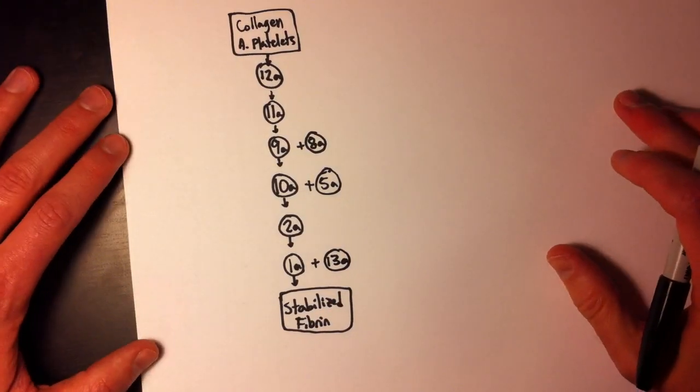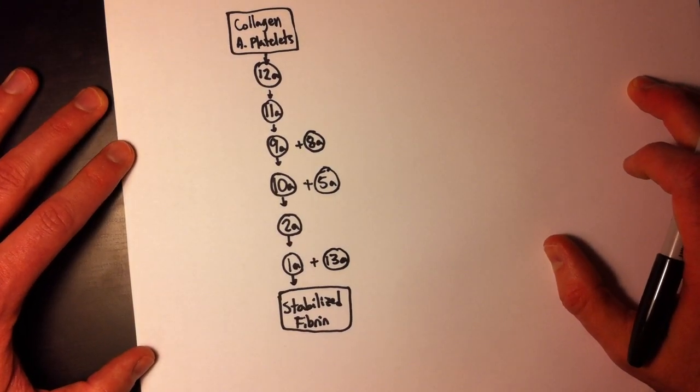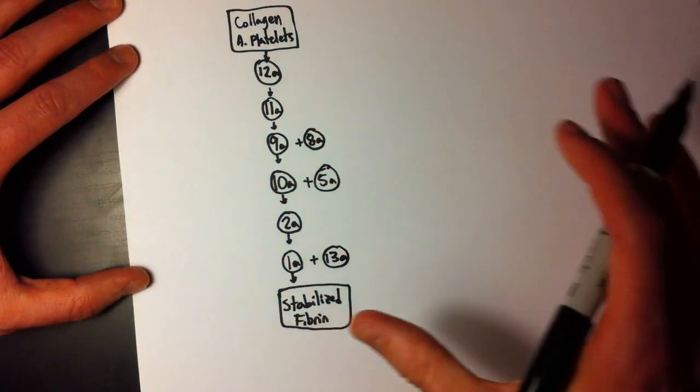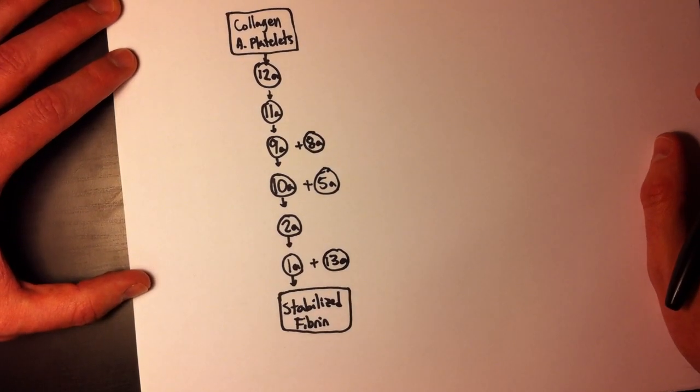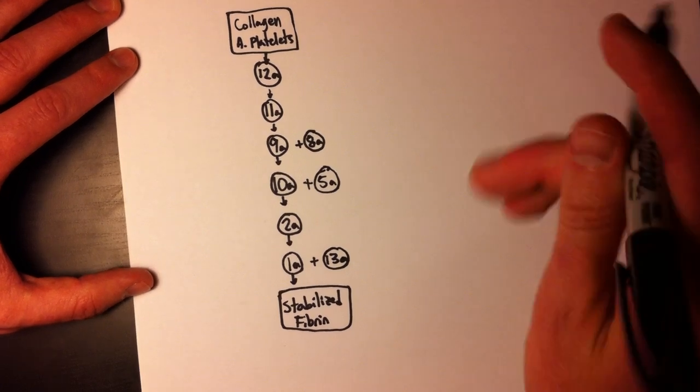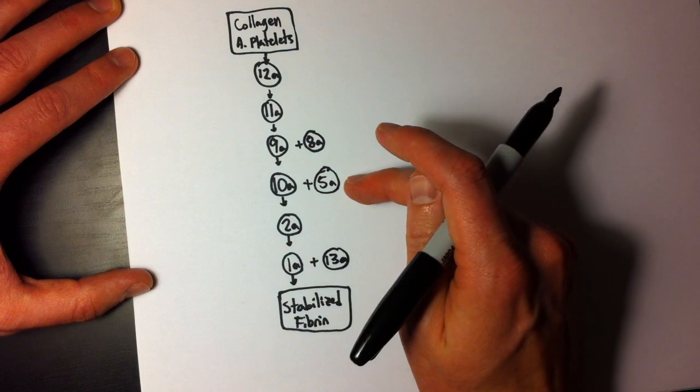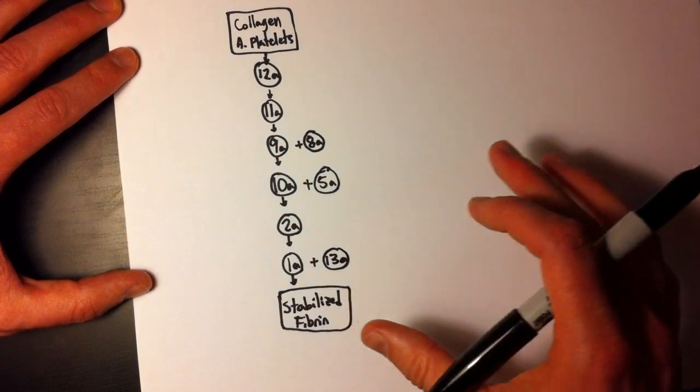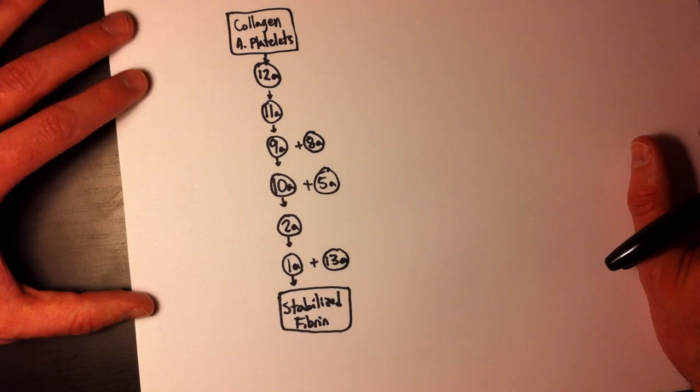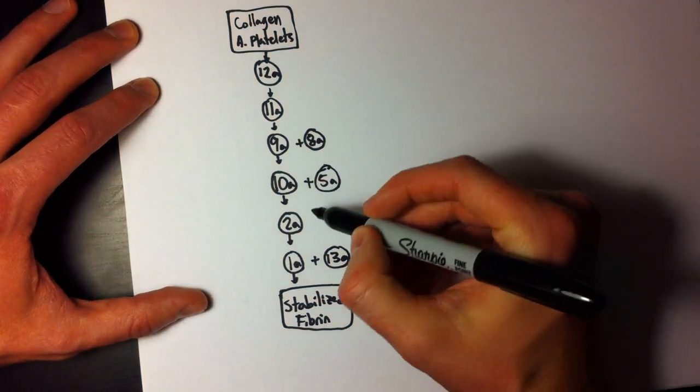So hopefully, at least for you, I mean I know for me this is a lot simpler than what I've seen. And this pretty much takes care of a lot of it. I guess we still have a few more details to add in. So 8A, 5A, and 13A, in order to be activated, they actually all require the help of thrombin, which is 2A.